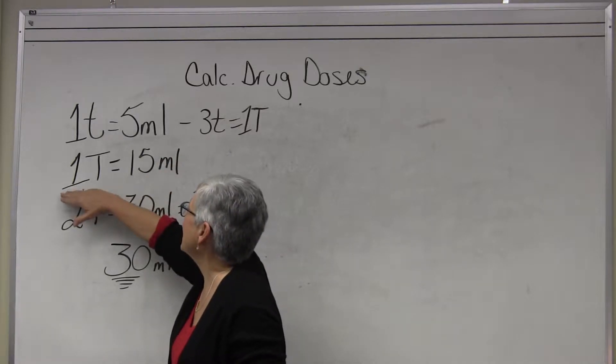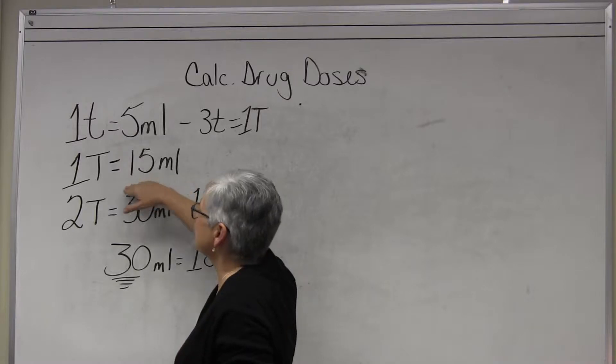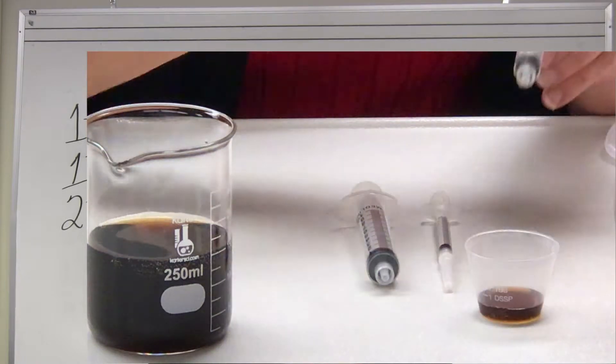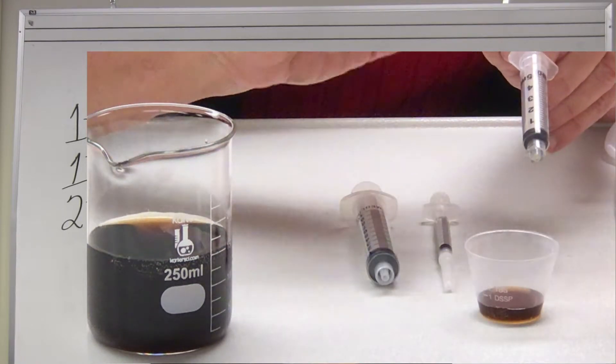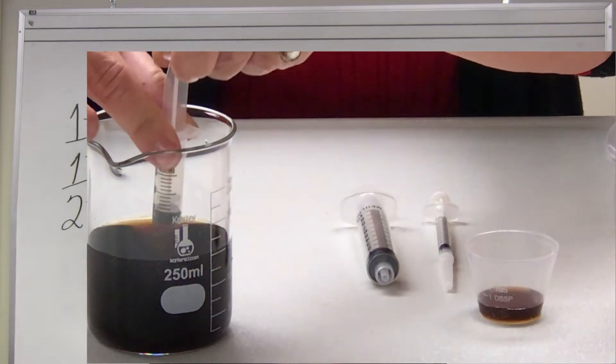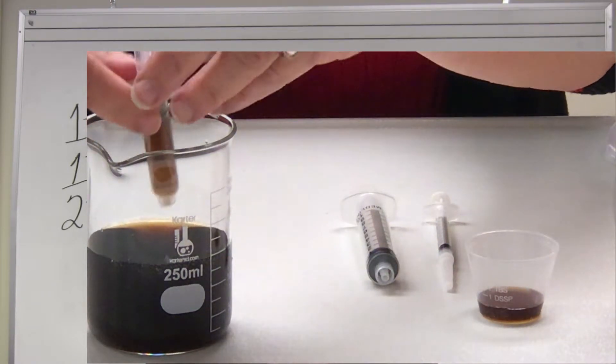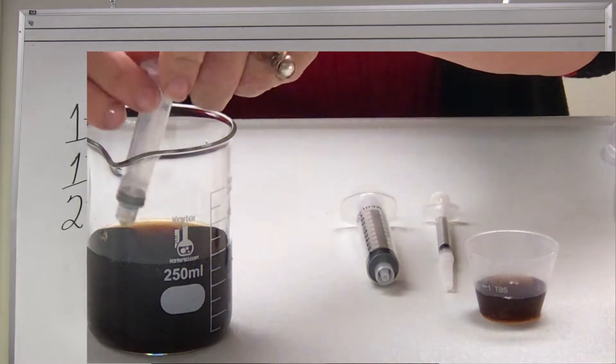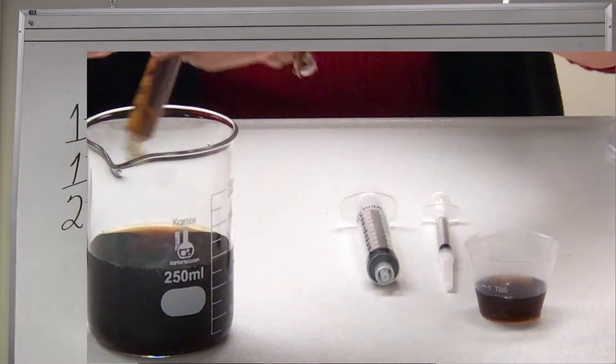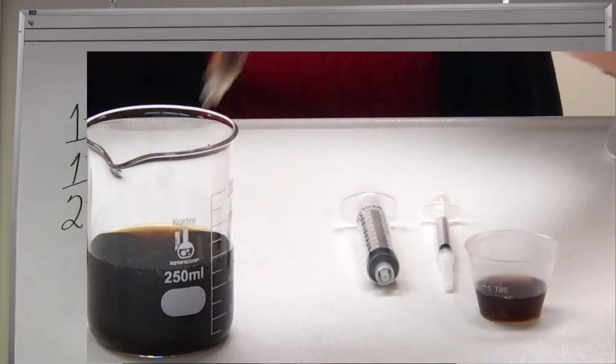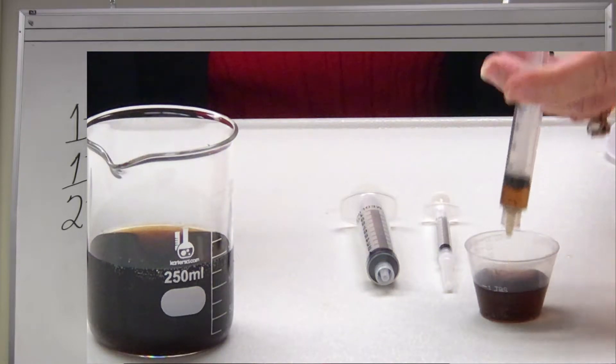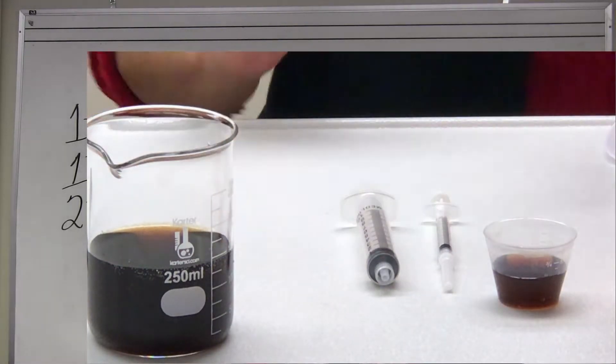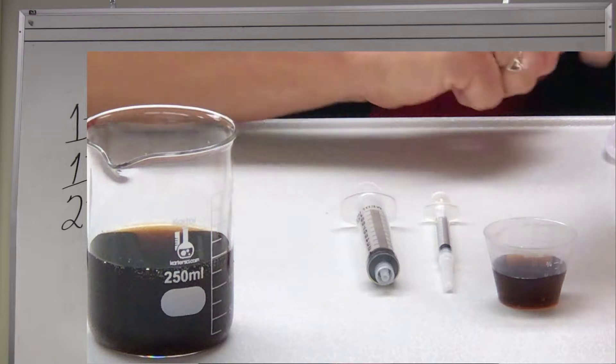That's five milliliters which is the same as a teaspoon. Moving on, three teaspoons equals a tablespoon. One tablespoon is 15 milliliters. That would be three of these. Three of these equals a tablespoon or 15 milliliters. If one is five, three is 15 - five, ten, fifteen, right? So let's see what that looks like and I want you to notice something.